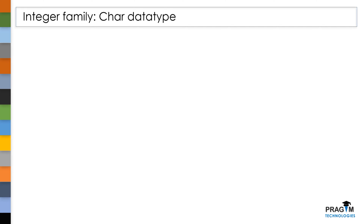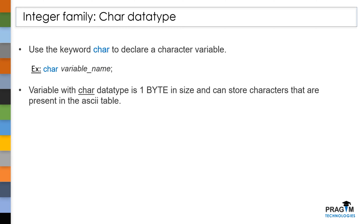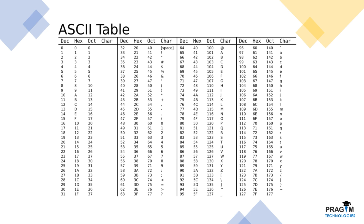In C, to declare a character variable we have to use the keyword char. This char keyword specifies that the variable is a character variable. In C, each character variable is one byte in size and can store the characters given in the ASCII table.